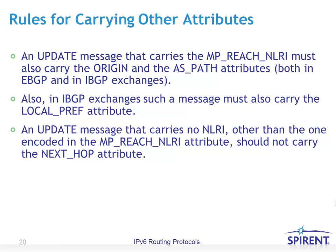A few additional rules for carrying other attributes when BGP is carrying IPv6 prefixes: an update message that carries the multi-protocol reachable NLRI must also carry the origin and the AS_PATH attributes in both eBGP and IBGP messages. In IBGP exchanges, such a message must also carry the local preference attribute. An update message that carries no network layer reachability information other than that encoded by the multi-protocol NLRI should not carry the next hop attribute.